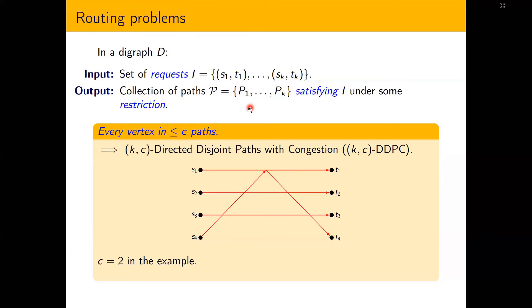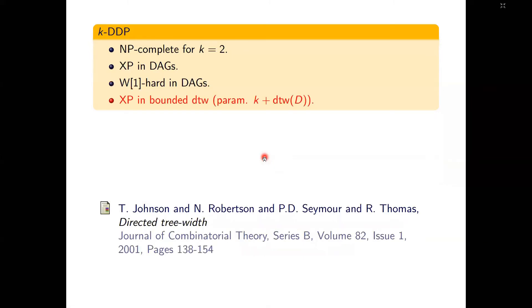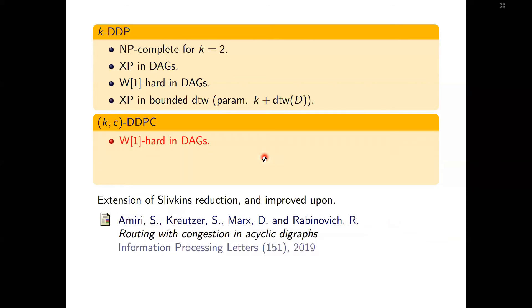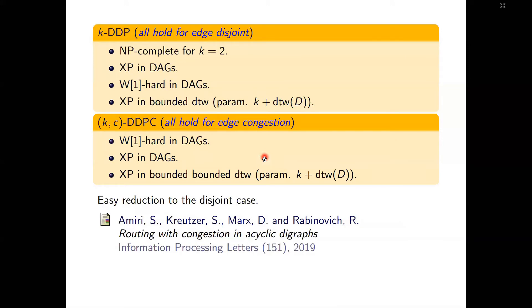We can also ask for every vertex to be in at most c paths of the solution. In this case, we are dealing with the directed disjoint path with congestion problem. Fortune, Hopcroft, and Willi showed that the k-directed disjoint path problem is NP-complete for k equals two, and that it is XP in k. Slivkin showed that this problem is W1-hard in k, and Johnson, Halberston, Seymour, and Thomas showed that it is XP in digraphs of bounded directed treewidth. For the congested version, an extension of Slivkin's reduction shows the problem is W1-hard in k, and an easy reduction to the disjoint case shows it is XP in k and XP in digraphs of bounded directed treewidth.